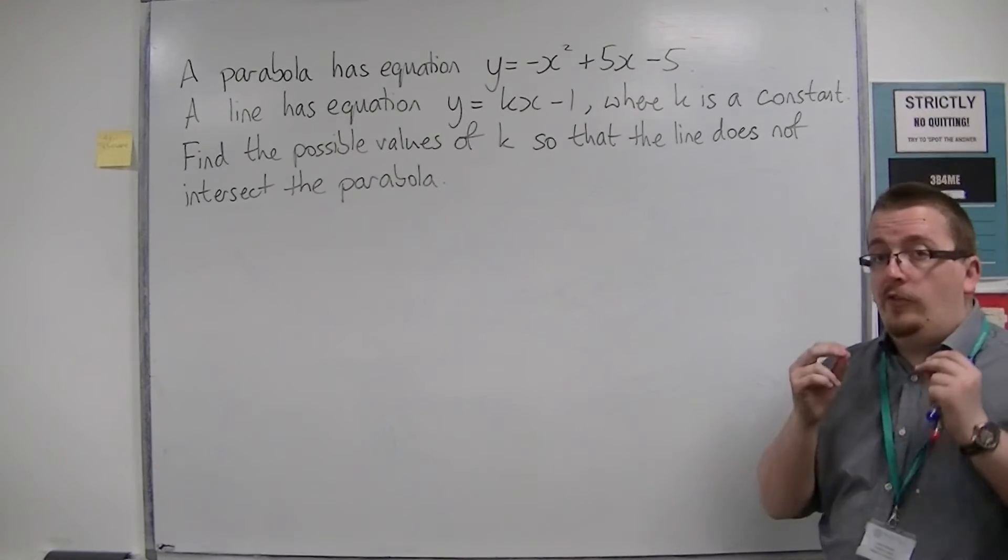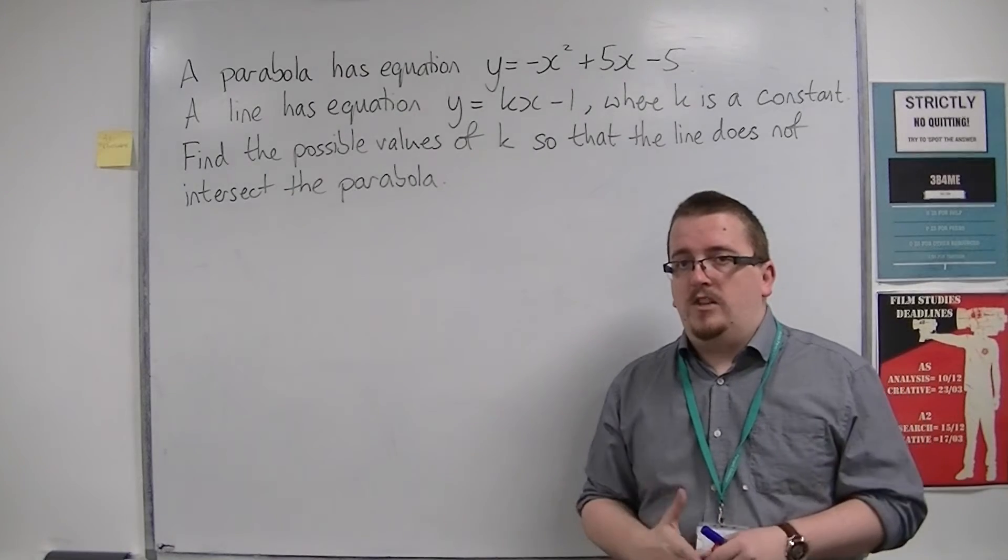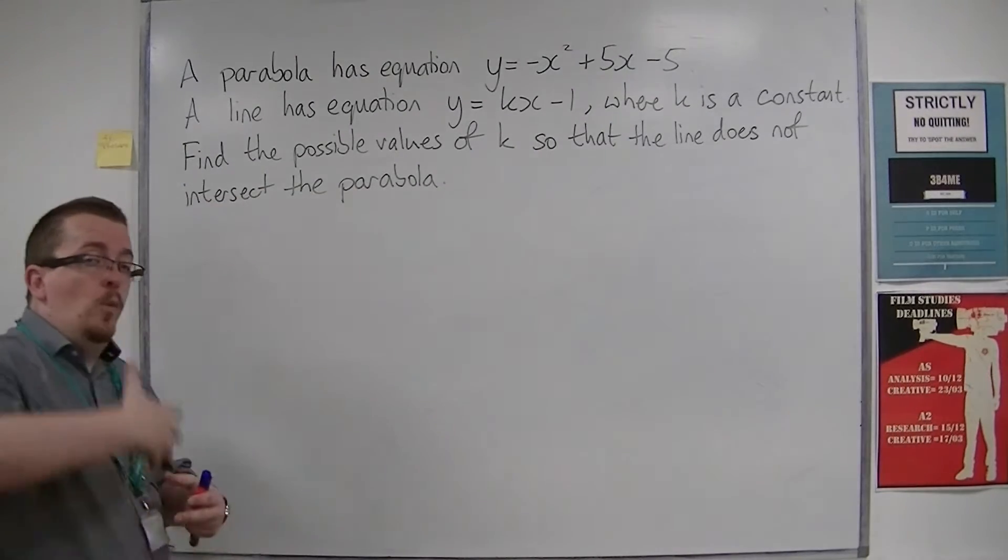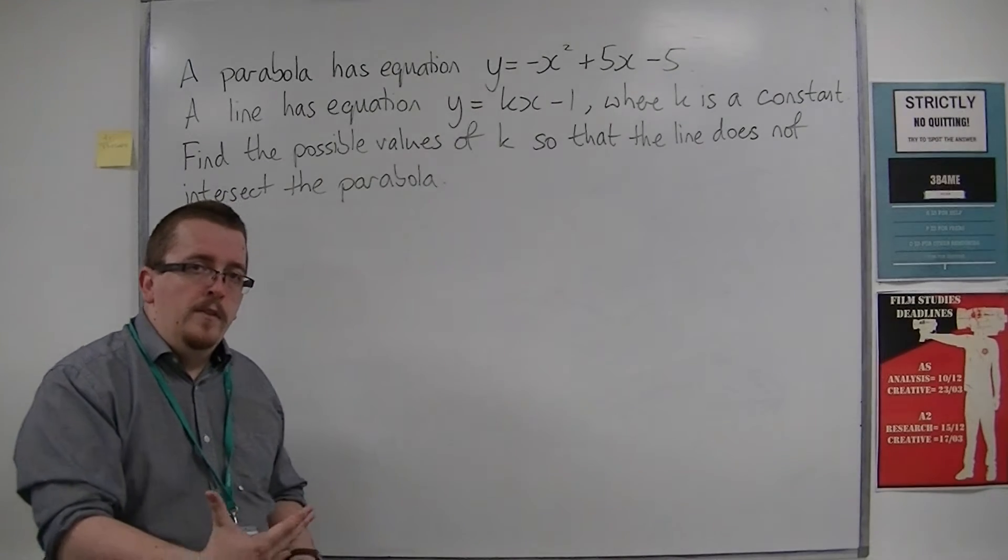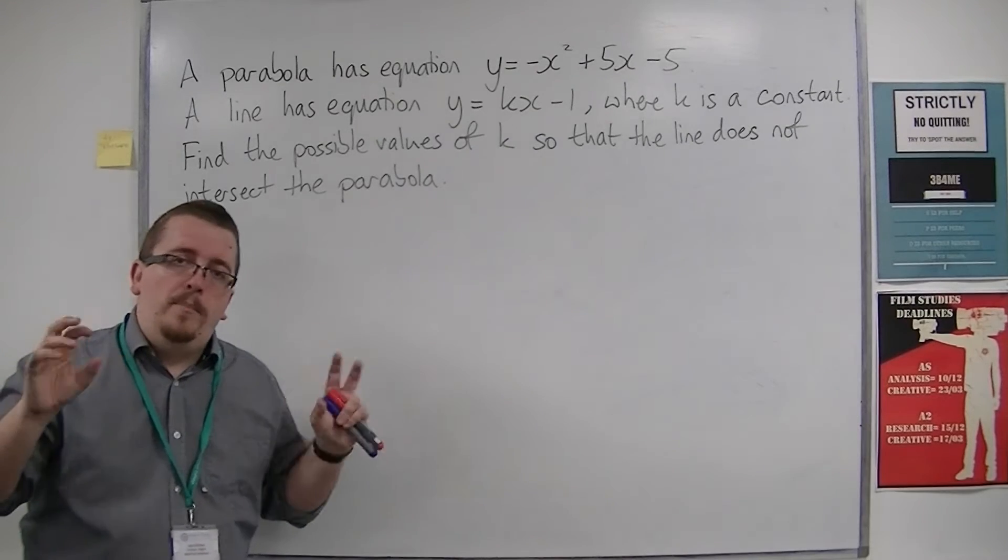Find the possible values of k so that the line does not intersect the parabola. Now, if I was asking you to find where the line intersected the parabola, then the word intersection should start alarm bells ringing.